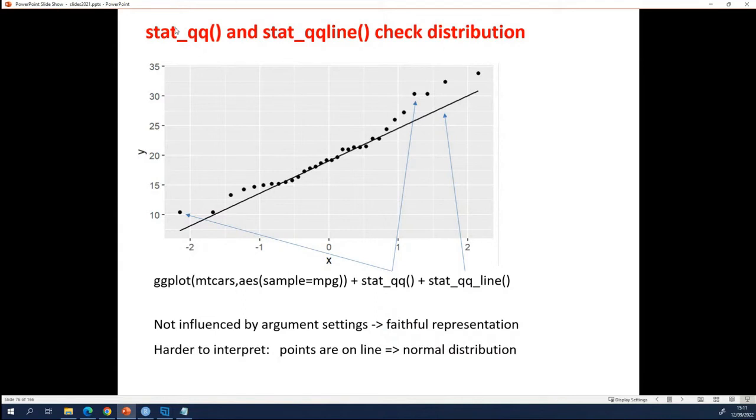There are stat functions like stat_summary. So stat_summary is not the only function in ggplot that can calculate statistics. You also have stat_qq that calculates the black points. And you have stat_qq_line that produces the line that should be followed by the points if they are normally distributed.